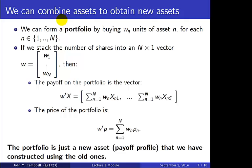We can buy some number of units of each asset and put them together. Let's use the notation w, where w-sub-n is the number of units of asset n that we buy, for each n from 1 to capital N. We can stack these unit holdings into a vector little w, where the number of shares of the first asset is at the top, then the second asset, down to the Nth asset.